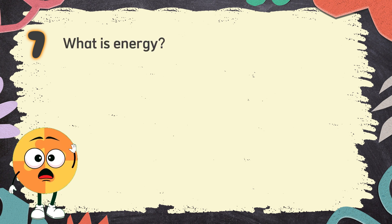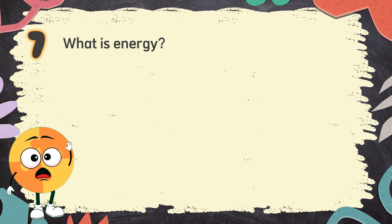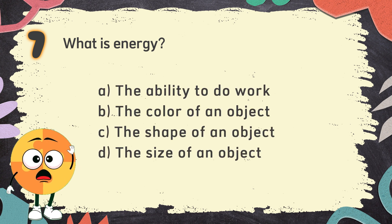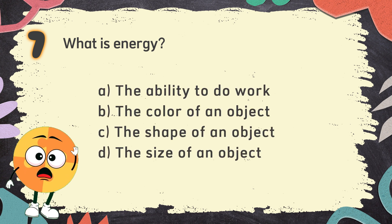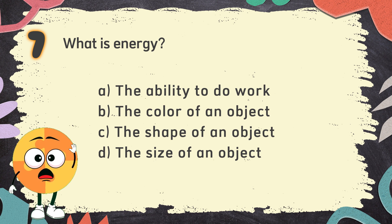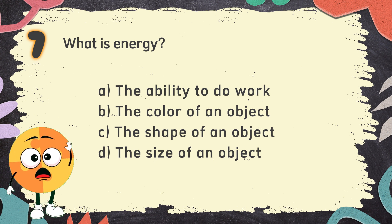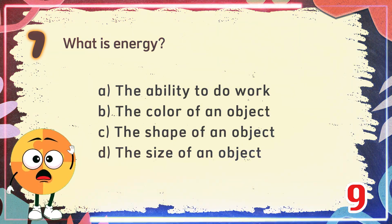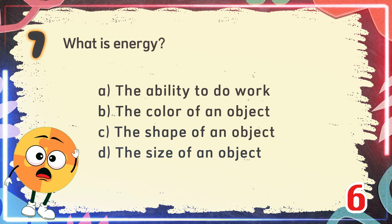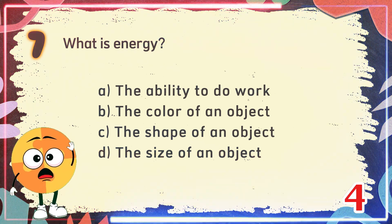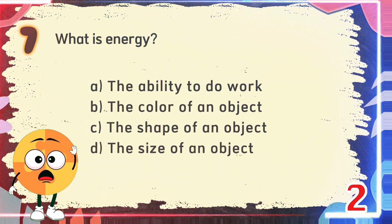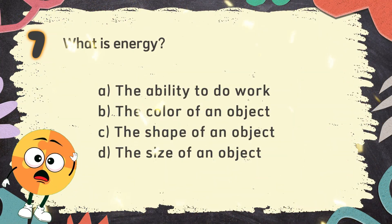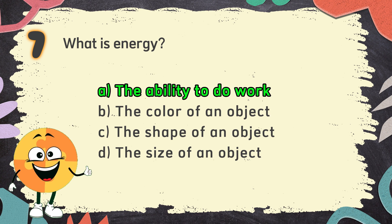Number 7. What is energy? The choices are: A. The ability to do work, B. The color of an object, C. The shape of an object, D. The size of an object. The correct answer is A. The ability to do work.